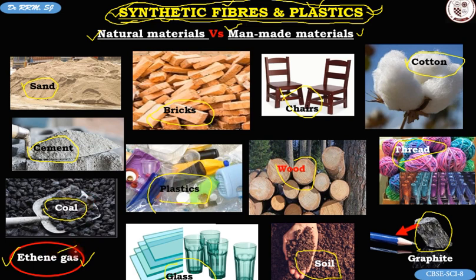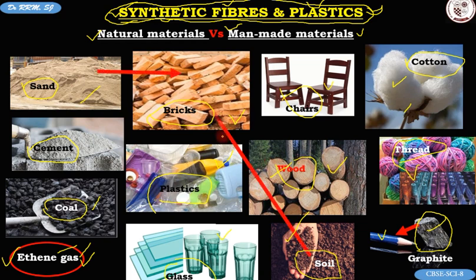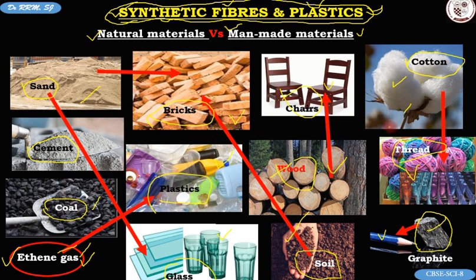Now, what are the differences among them? Sand, coal, ethene gas, wood, soil, cotton, and graphite exist in nature — they have been made by nature, some by plants. Cotton and wood are made by plants, so we call them natural materials. Bricks, plastics, glass, chairs, and thread have been made by human beings. Bricks are made from sand and soil, glassware from sand, plastics from ethene gas, chairs from wood, and threads from cotton — so we call them man-made materials.